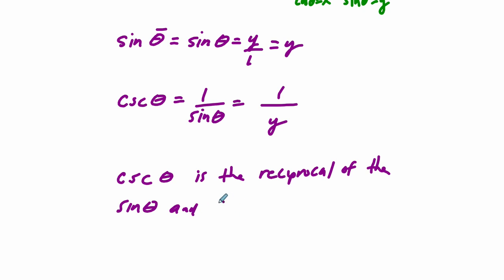But I would say that the cosecant of theta is the reciprocal of the sine of theta. And the sine of theta equals y. So, the cosecant of theta is 1 over y.